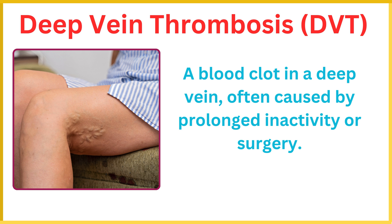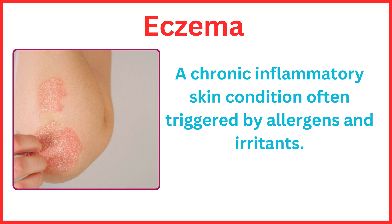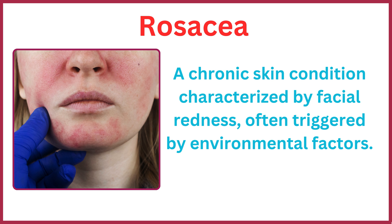Deep vein thrombosis is a blood clot in a deep vein, often caused by prolonged inactivity or surgery. Acne is caused by hormonal changes, bacteria, and excess oil production in the skin. Eczema is a chronic inflammatory skin condition often triggered by allergens and irritants. Psoriasis is an autoimmune condition that causes rapid skin cell production, leading to scaling and inflammation. Rosacea is a chronic skin condition characterized by facial redness, often triggered by environmental factors.